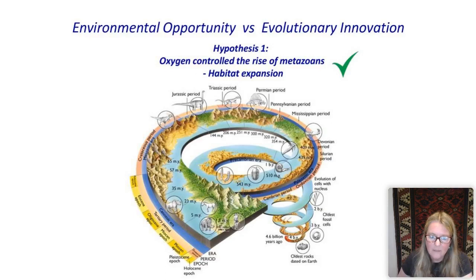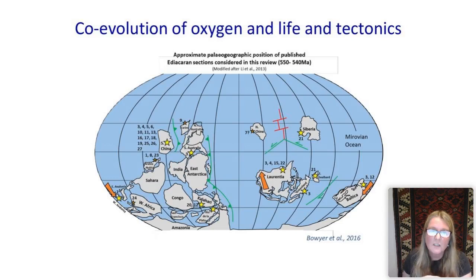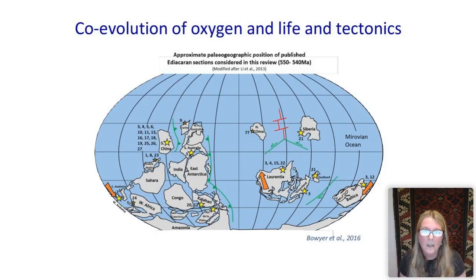I think we are some way to proving this first hypothesis: that oxygen did control the rise of metazoans in the terminal Ediacaran to Cambrian, driven in large part by habitat expansion. However, these habitats were very dynamic and much smaller than today. I've been talking about just one craton — the Kalahari craton. Similar studies in other cratons like South China indicate quite different redox dynamics and nutrient loads, suggesting we need to think about a co-evolution of oxygen and life with plate tectonics, where rates of rifting and continental breakup determine weathering rates.